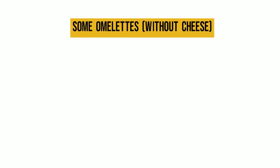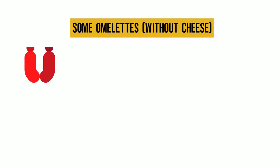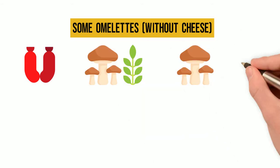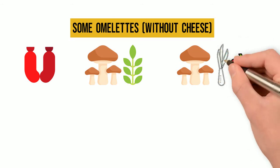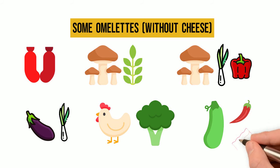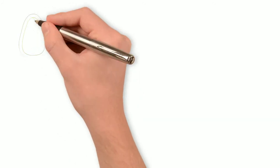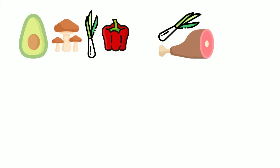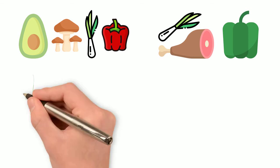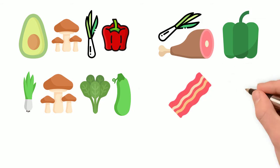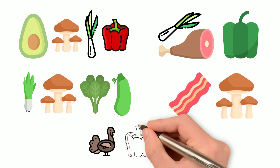Next we're going to look at some omelettes without cheese. Chorizo on its own as a chorizo omelette; mushroom with finely chopped herbs; mushroom, peppers and onion; aubergine — often called eggplant — and onion; diced chicken and broccoli; zucchini, chili and crispy bacon; avocado, mushroom, onion and chopped peppers; chopped ham, onion and chopped green peppers; chopped spring onion, mushroom, spinach and zucchini; bacon and mushroom; turkey, peppers and tomato.